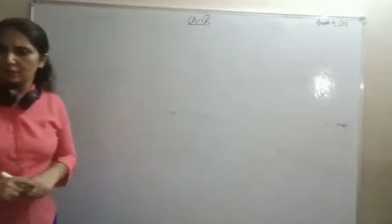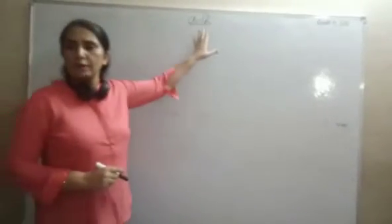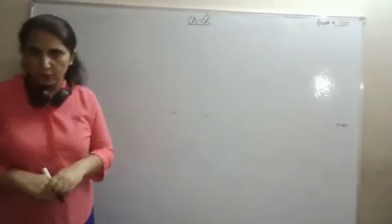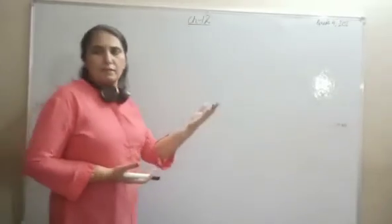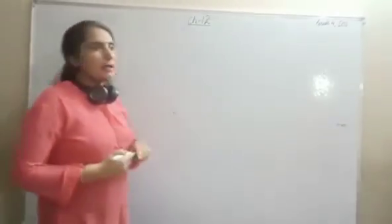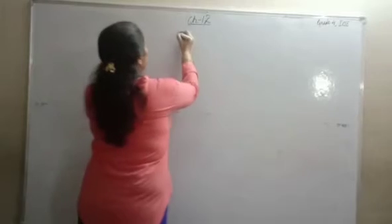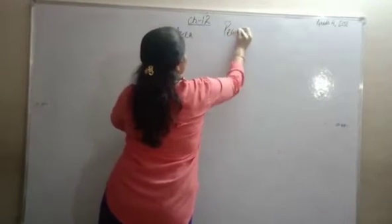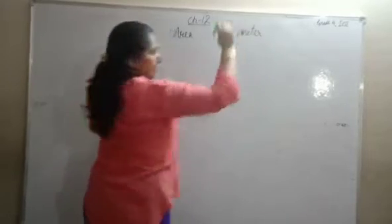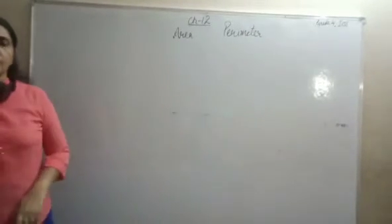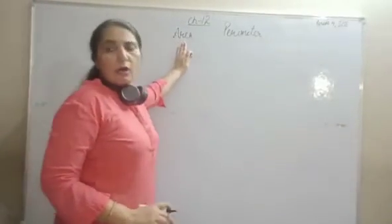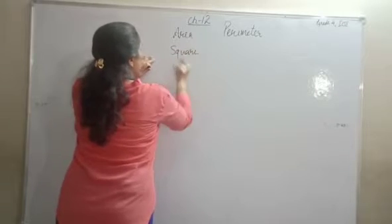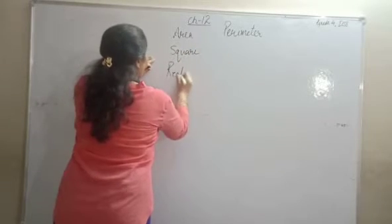Hello children. Today I am going to explain chapter 12, that is perimeter and area. We did this chapter in the previous video also. Here, till now we have done two concepts: area and perimeter, area of square and area of rectangle.